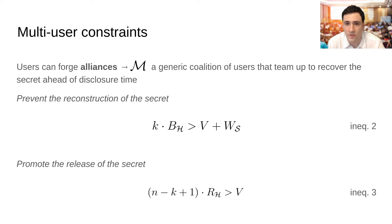But we also have to consider that the parties may forge alliances. We then introduce M, a generic coalition of users that team up to recover the secret ahead of disclosure time. To ensure that M doesn't break the time lock, we set the maximum payoff achievable by monetizing the secret to be lower than the total cost spent to get case shares. At the same time, when disclosure time expires, we need to add a constraint to avoid M, to lead the time lock to a stall, refusing to submit its share, waiting for a buyout of the secret. This is done adding the third constraint.